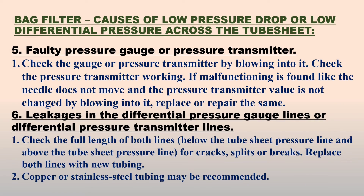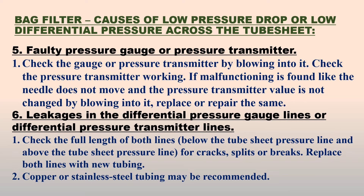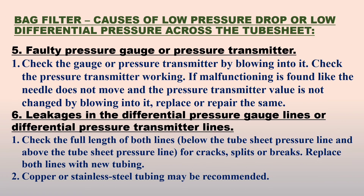One of the main causes of low differential pressure is leakage in the differential pressure gauge lines or differential pressure transmitter lines. Point number 1: check the full length of both lines — the below-tube-sheet pressure line and the above-tube-sheet pressure line — for cracks, splits, or breaks, and replace both lines with new tubing. Point number 2: copper or stainless steel tubing is recommended.